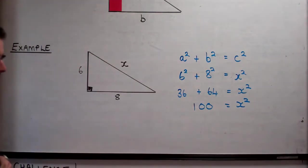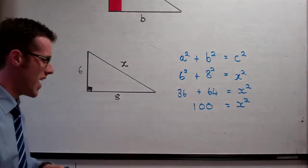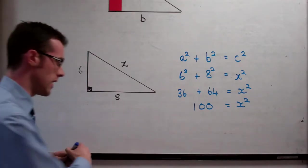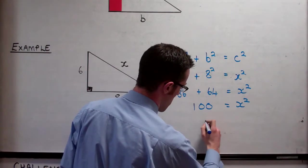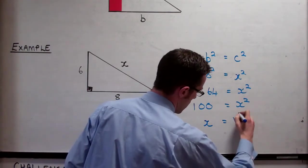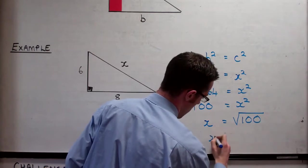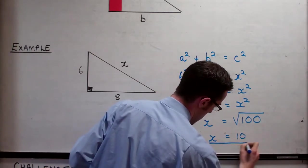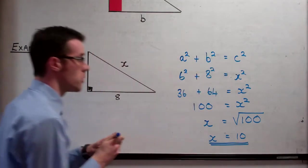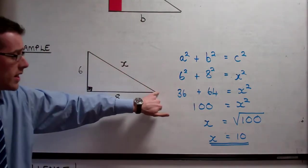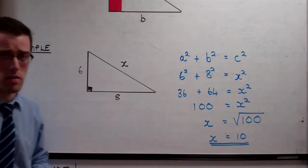Now how do we figure out, if we know 100 is x squared, how can we figure out what x is? We'll use the square root, which, remember, is backward squaring. So x is equal to the square root of 100. And that's 10. So that's our answer. We've worked out, using the theorem of Pythagoras, that this side here is 10.